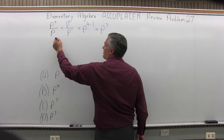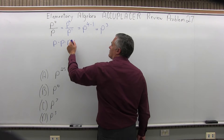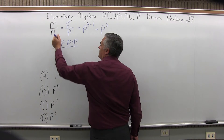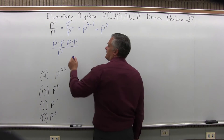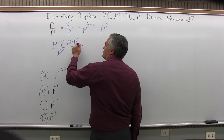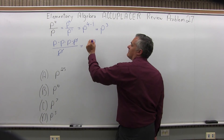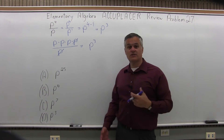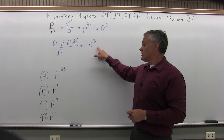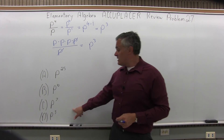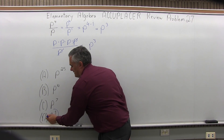To see why it works: the p to the fourth in the numerator is four p's multiplied together, and the p in the denominator, or p to the first, is just a single p. What you're doing when you subtract your exponents is counting how many of that variable are left after you cancel the ones that cancel in the top and bottom. Either way, you do get p to the third, which is one of the four options, option D.